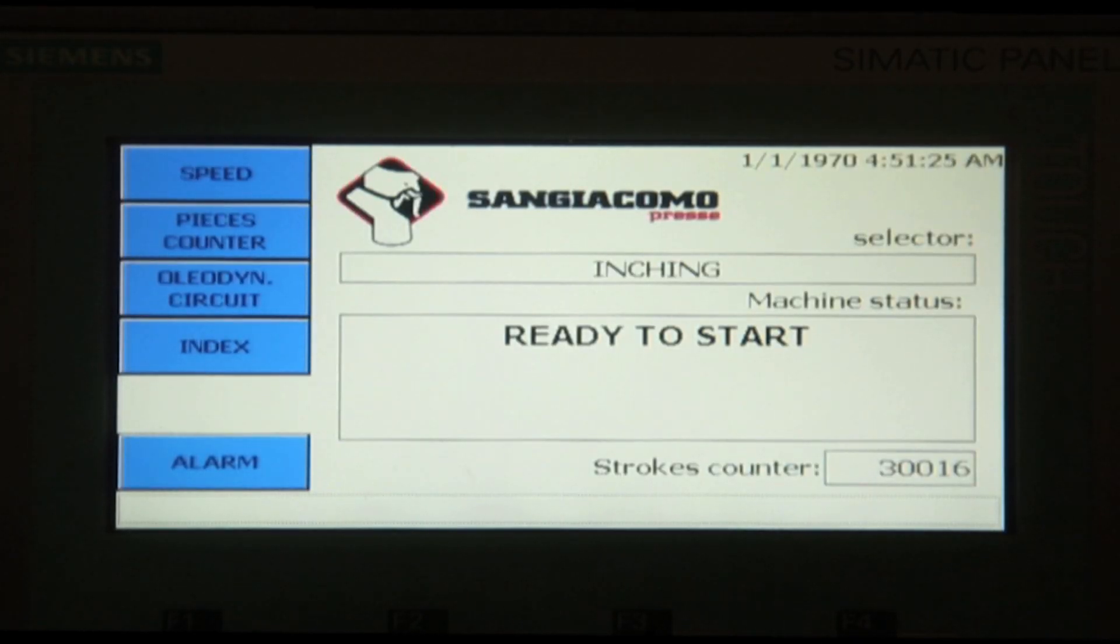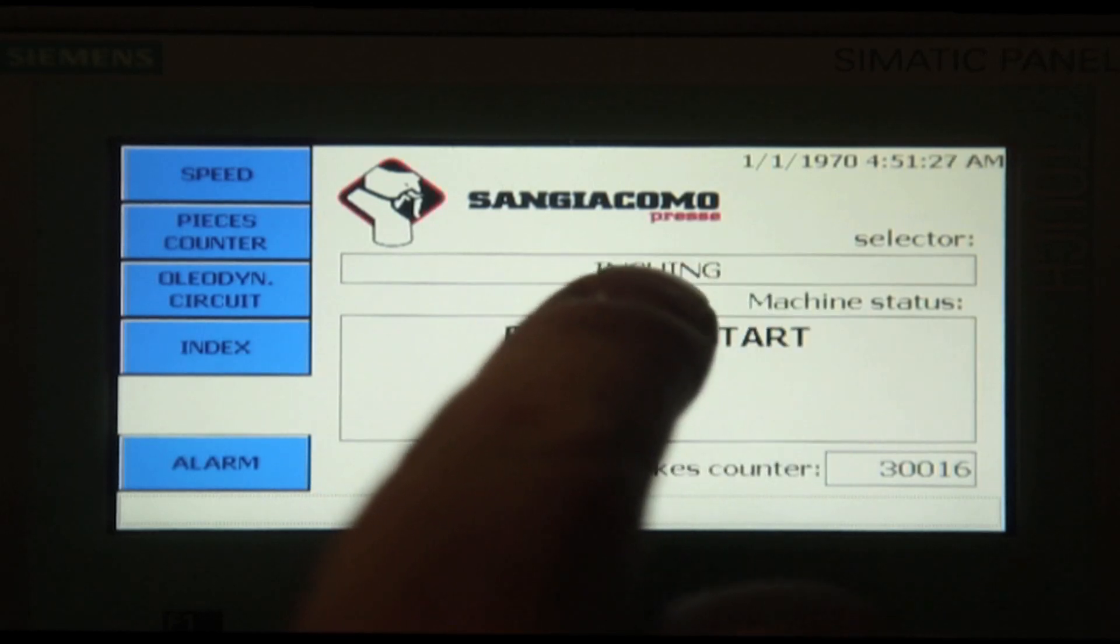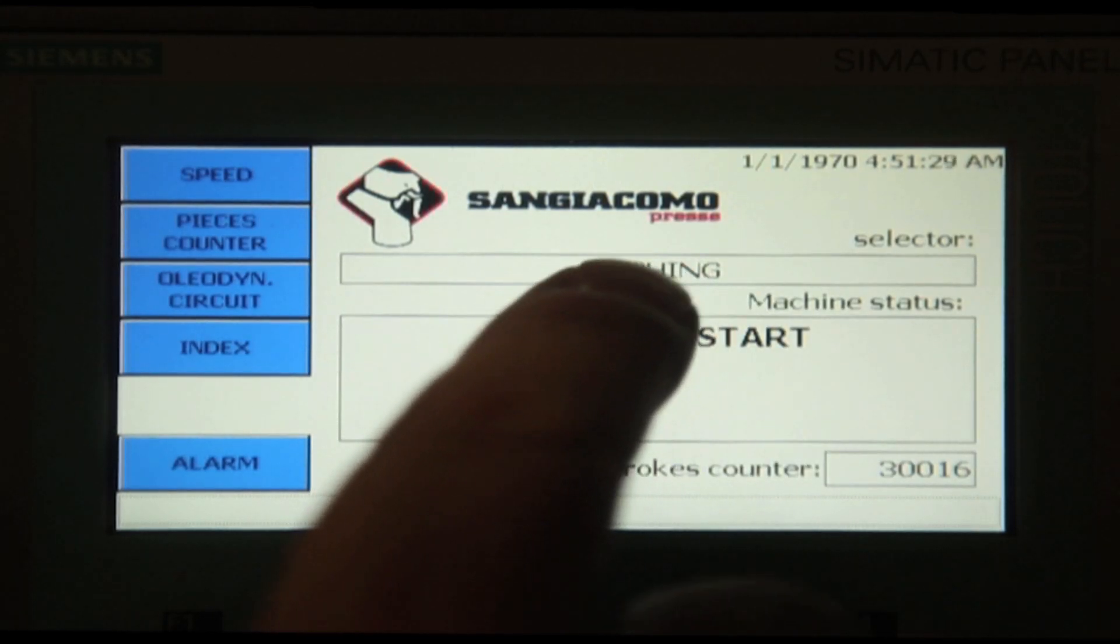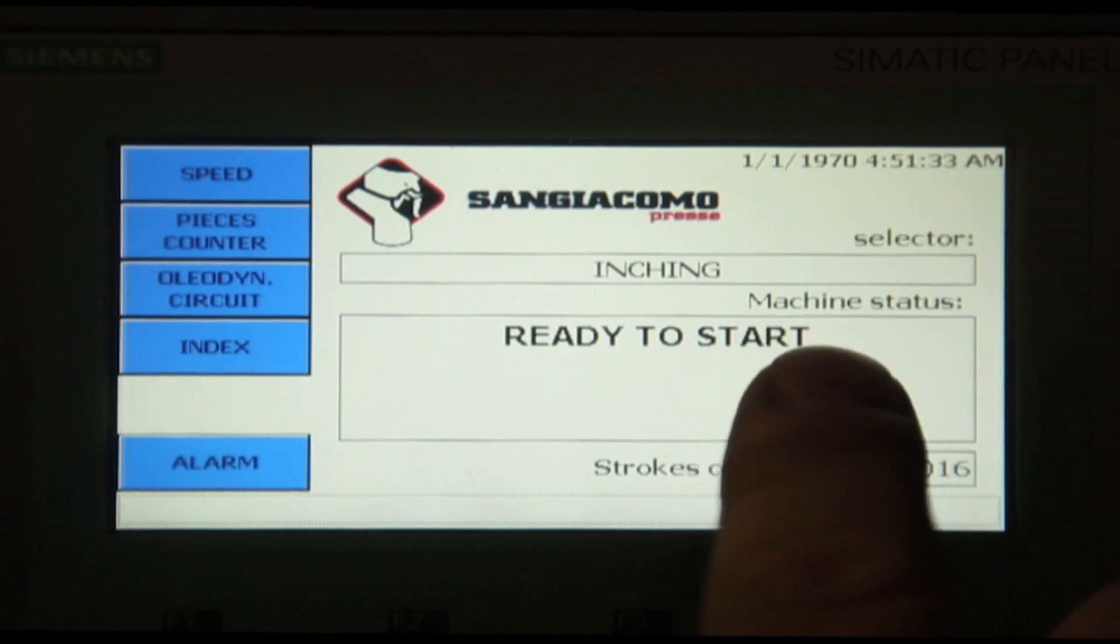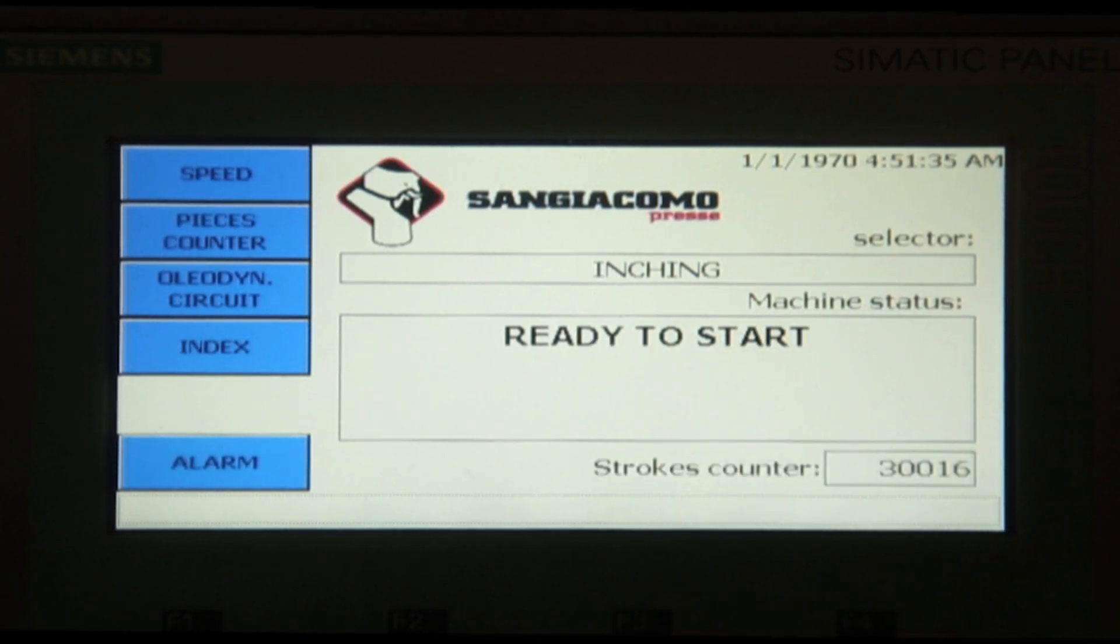At the home screen you can see that it has a selector letting us know what mode we are in. Right now we're in inching mode. The next area down is the machine status. It's telling me it's ready to go and how many strokes we're currently on.